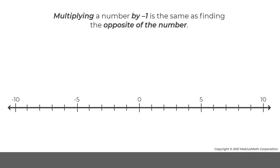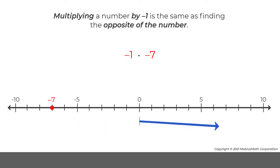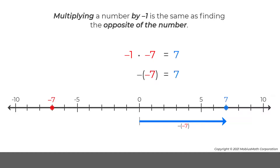In a similar way, multiplying negative 1 times negative 7 is the same as finding the opposite of negative 7. So, negative 1 times negative 7 equals 7.